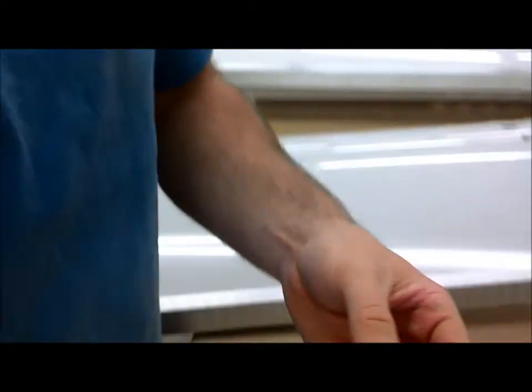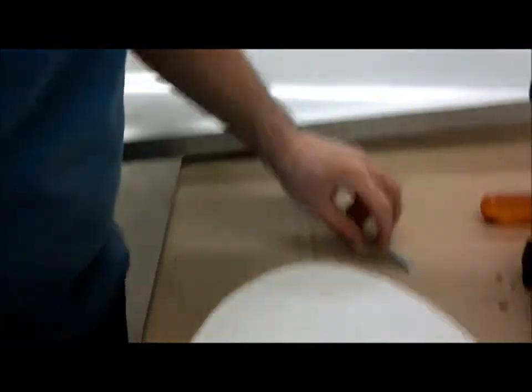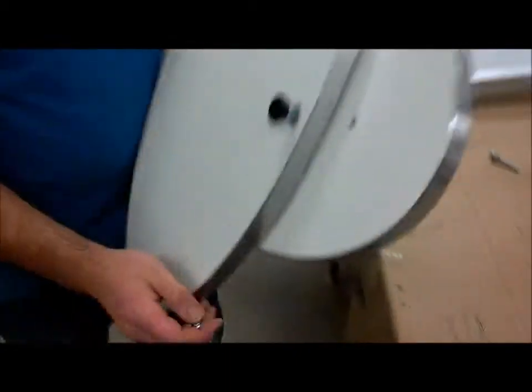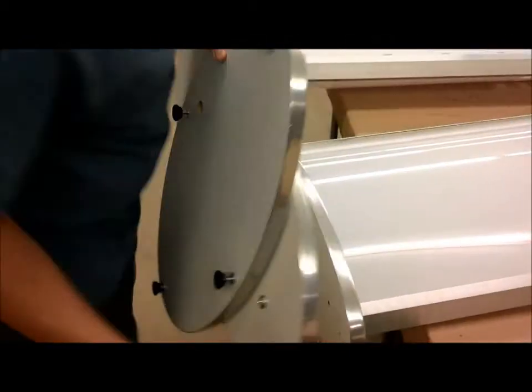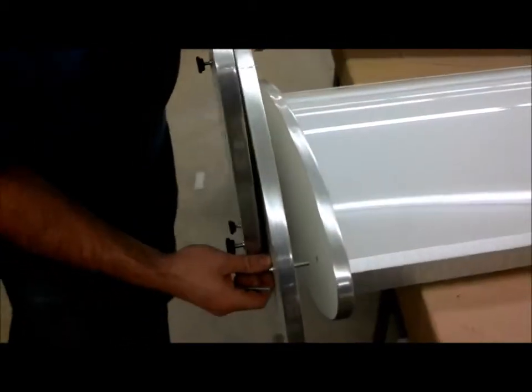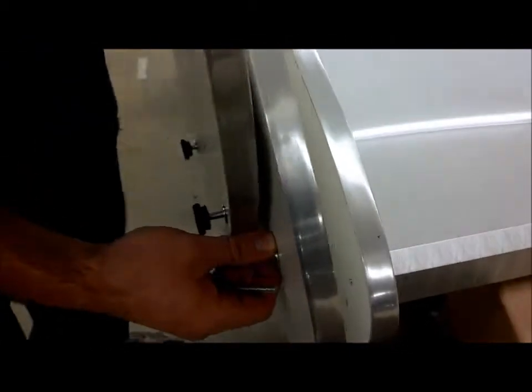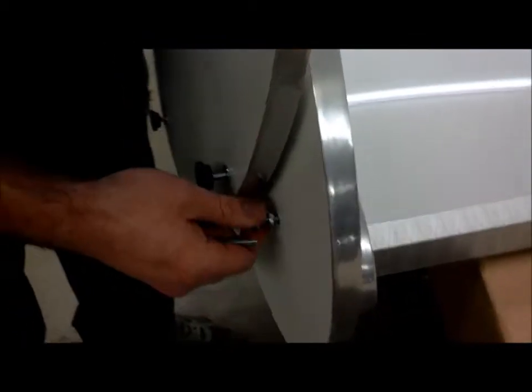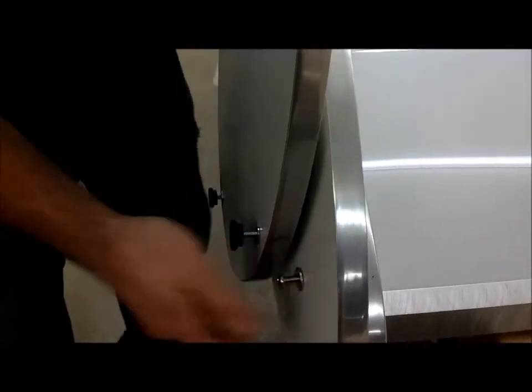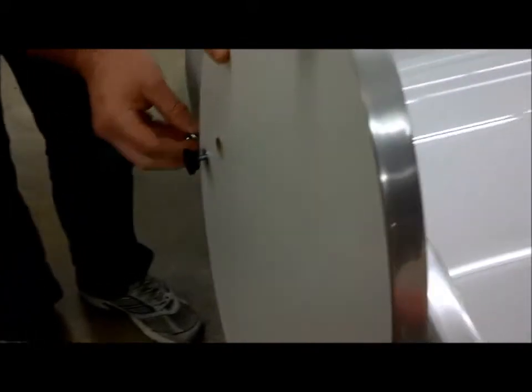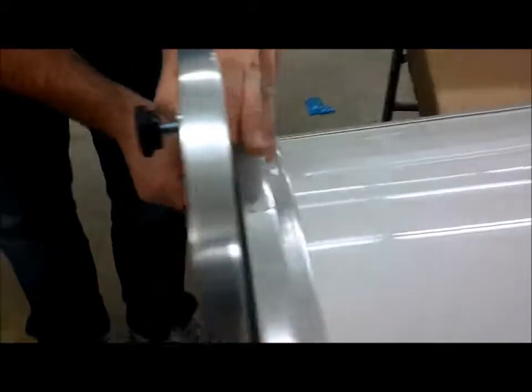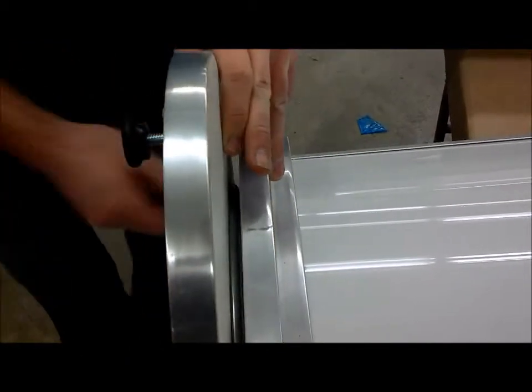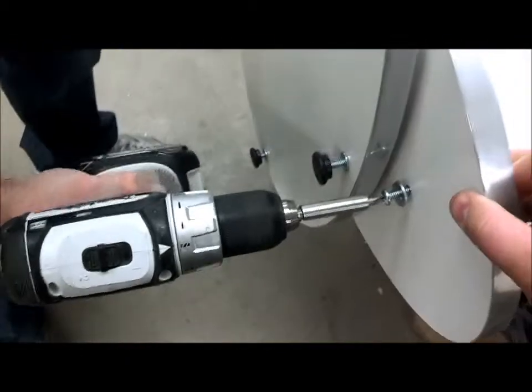You're going to take your quarter-twenty bolts that come with your display and put it through. You might want to get somebody else to help you with this, if possible. Basically, you want to hand start these into the hole on the bottom of the display. Once you've got them started, you can screw them all the way in.